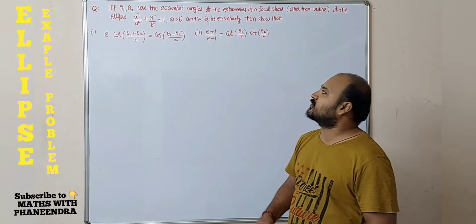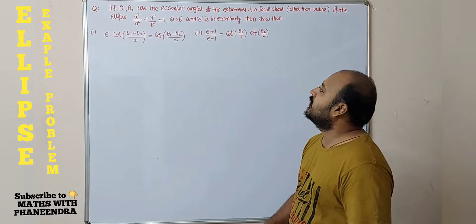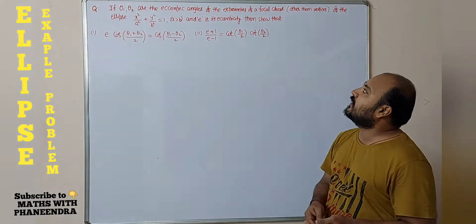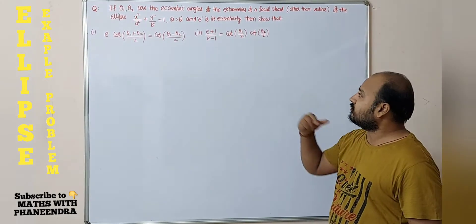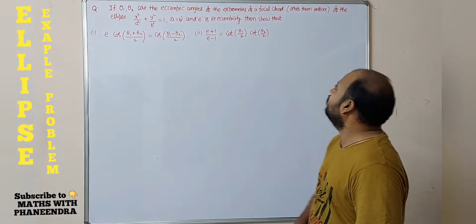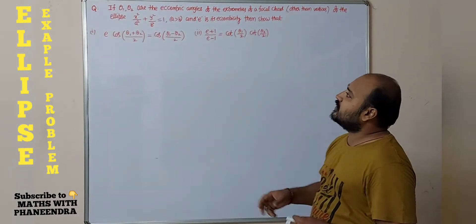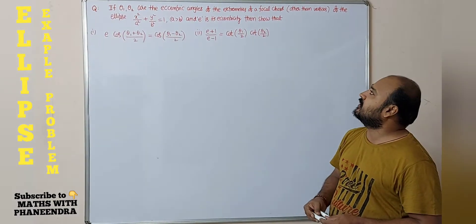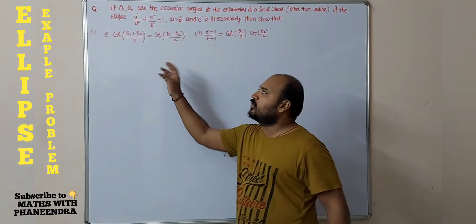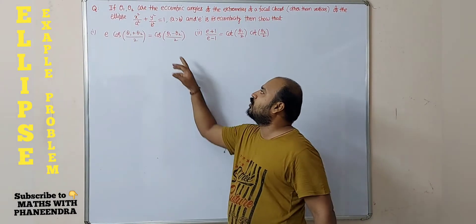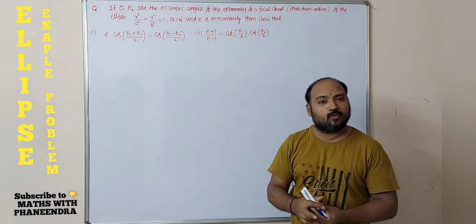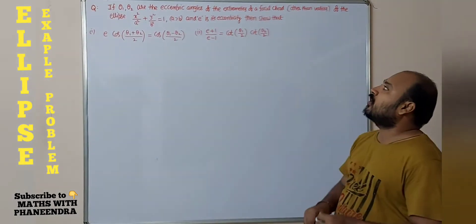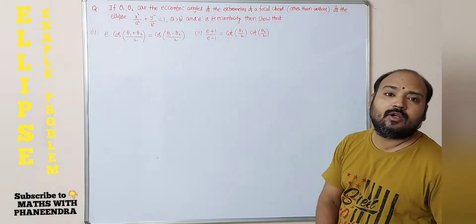Hi dear students. The next question: if theta1 and theta2 are the eccentric angles of the extremities of the focal chord (other than vertices) of the ellipse, and e is the eccentricity, then show that: (1) e·cos((θ1+θ2)/2) = cos((θ1−θ2)/2), and (2) (e+1)/(e−1) = cot(θ1/2)·cot(θ2/2).